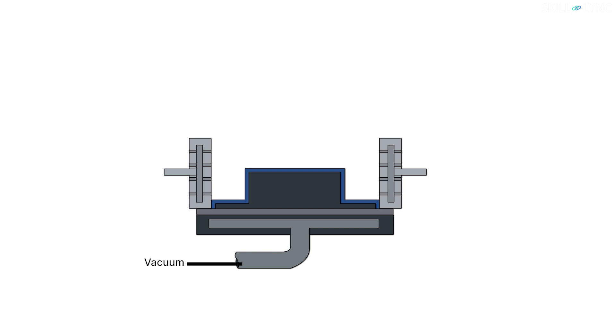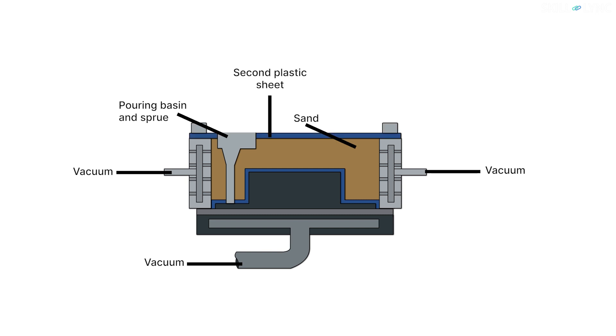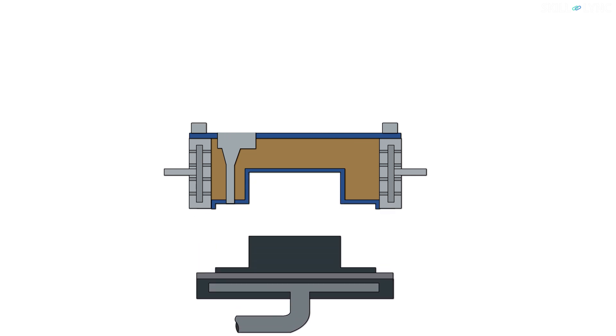A molding flask is placed over this enveloped pattern and dry binderless sand is filled into the flask. After this, a second sheet of plastic is placed above the sand. A vacuum is provided to the flask which compresses the sand and then the pattern is removed.